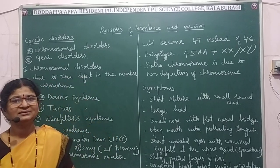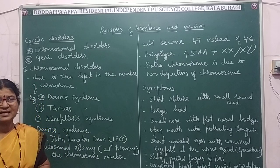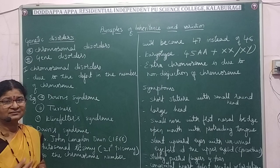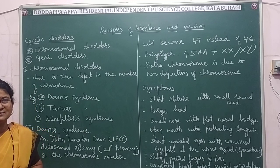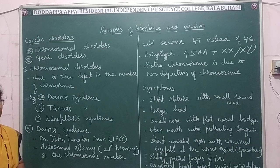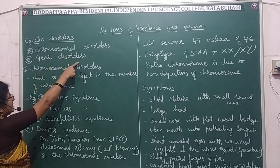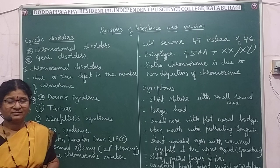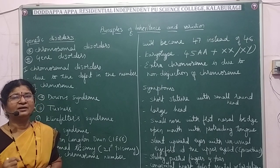Hello children, let us learn about genetic disorders. Genetic disorders are due to chromosomal or gene defects. As I told you in the previous class, they were first studied in detail by Sir Archibald Garrod. In genetic disorders, there are two types: chromosomal disorders and gene disorders, depending upon whether the defect is present in the chromosome or in the gene.